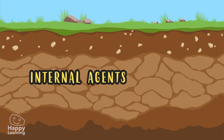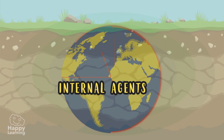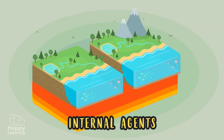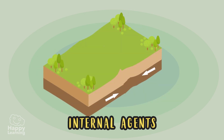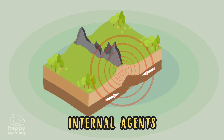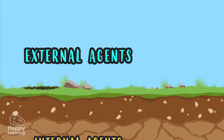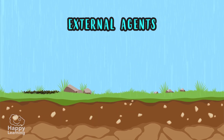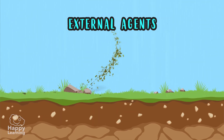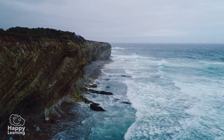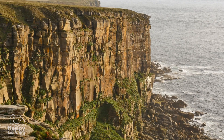The internal agents are the movements that take place inside the Earth when tectonic plates move together and separate, modifying the Earth's crust. And the external agents, on the other hand, can be rain, wind, or waves that crash, wearing down and even remodelling the land — until they create these huge cliffs!